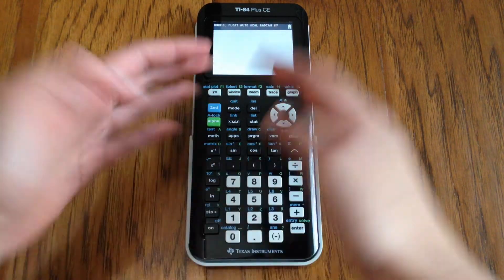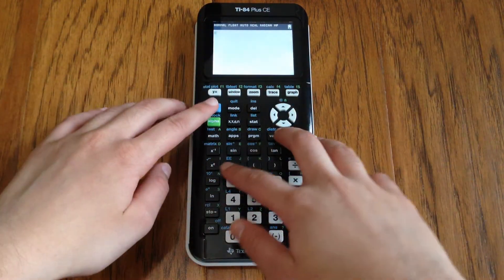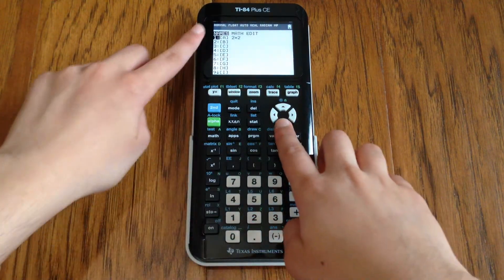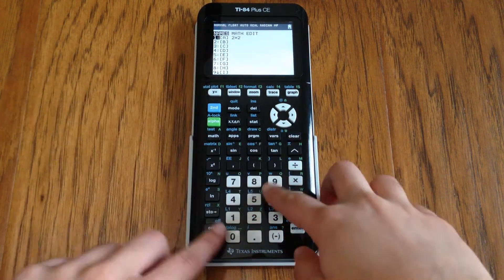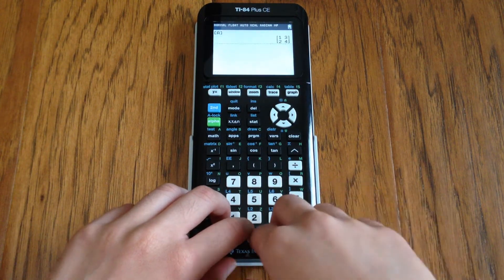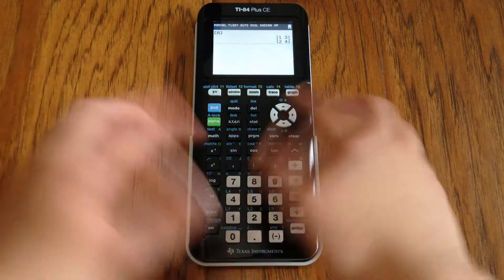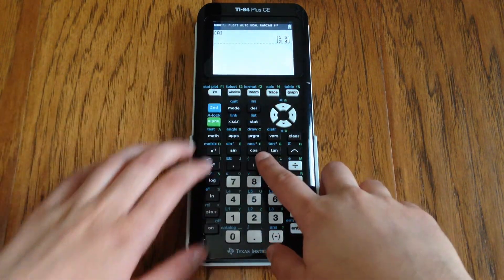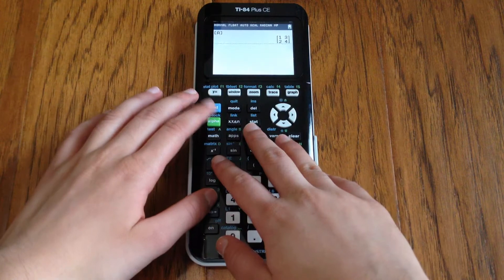Now what we can do to actually use this is to go to the matrix menu and at names you can select the matrix that you just edited and you can perform operations with it and you'll get the result here. So let's try multiplying two matrices.